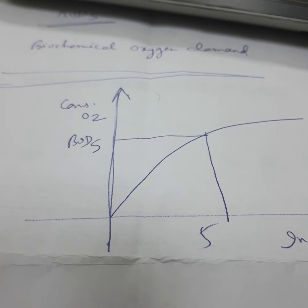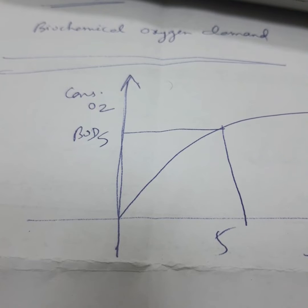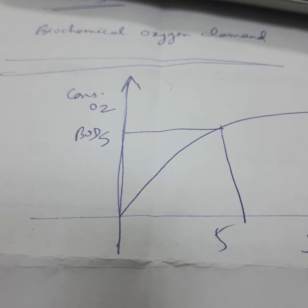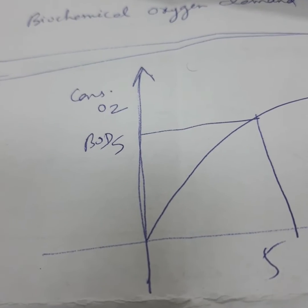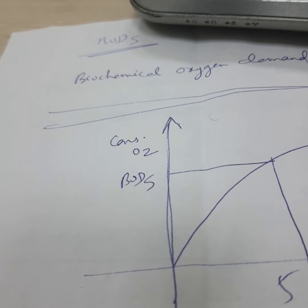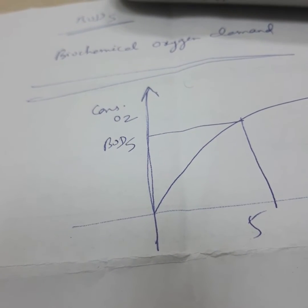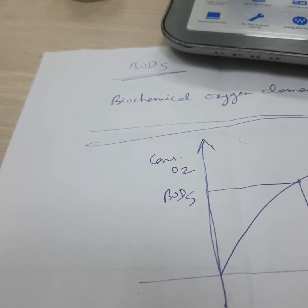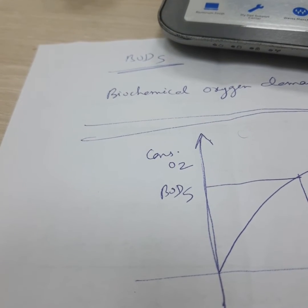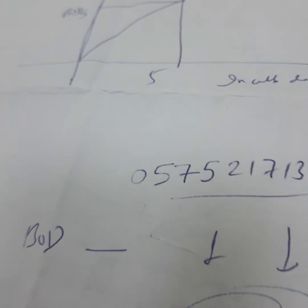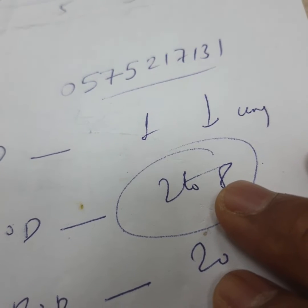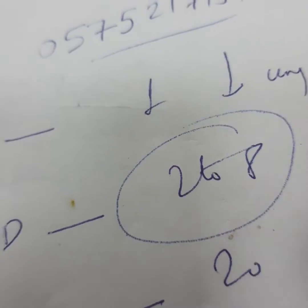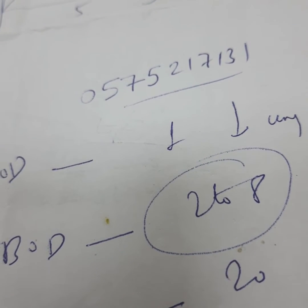BOD is measured as a decrease in dissolved oxygen in ppm or milligrams per liter after five days of incubation. BOD is affected by numerous parameters: pH must be in the range of 6.5 to 8.5, temperature must be 20°C, and there must be enough organic matter and dissolved oxygen. If BOD is less than 1, the water is unpolluted. BOD of 2 to 8 indicates moderately polluted water. BOD above 20 indicates efficiently treated municipal wastewater, and BOD of 200 to 800 indicates water that is polluted and needs treatment.